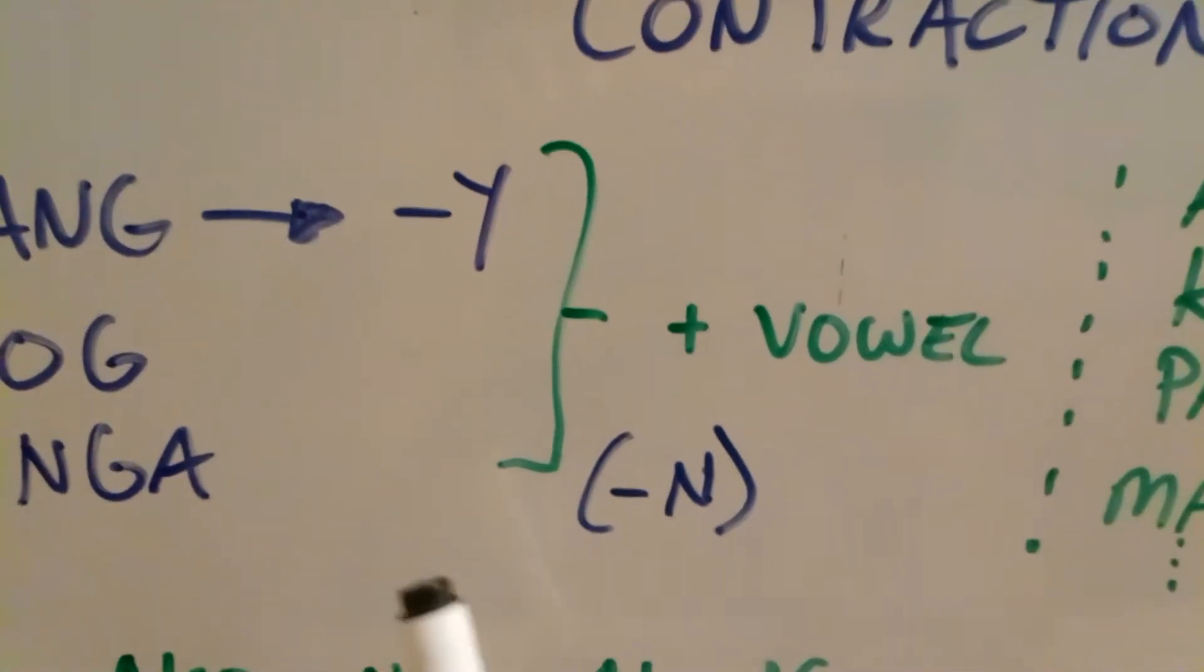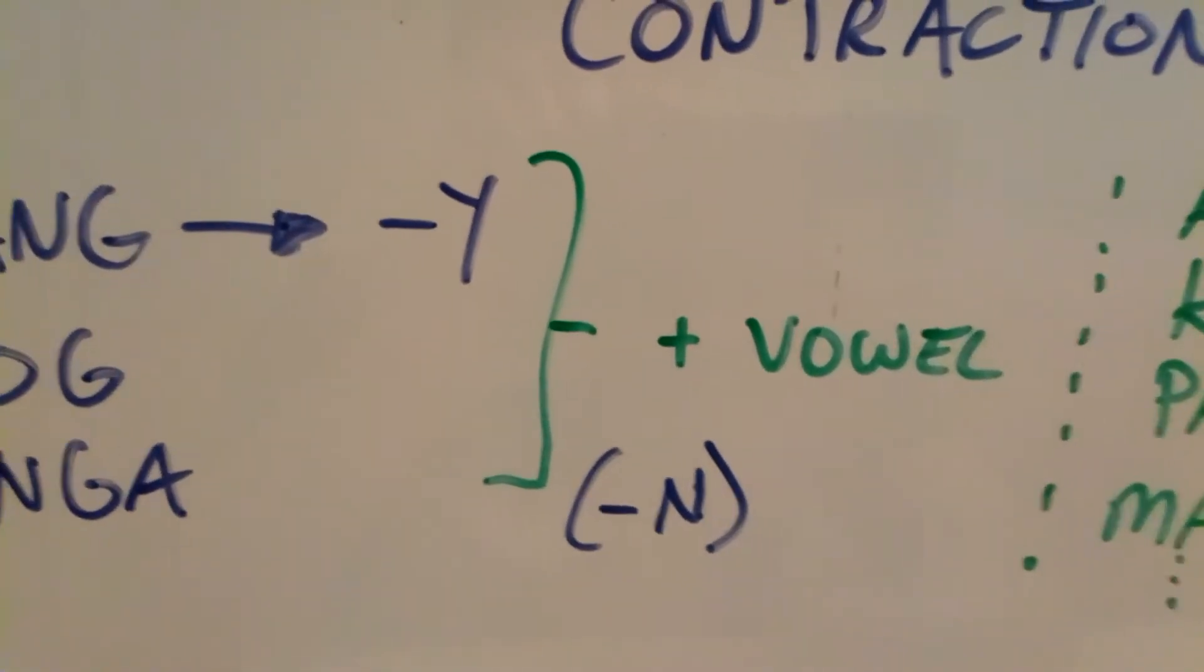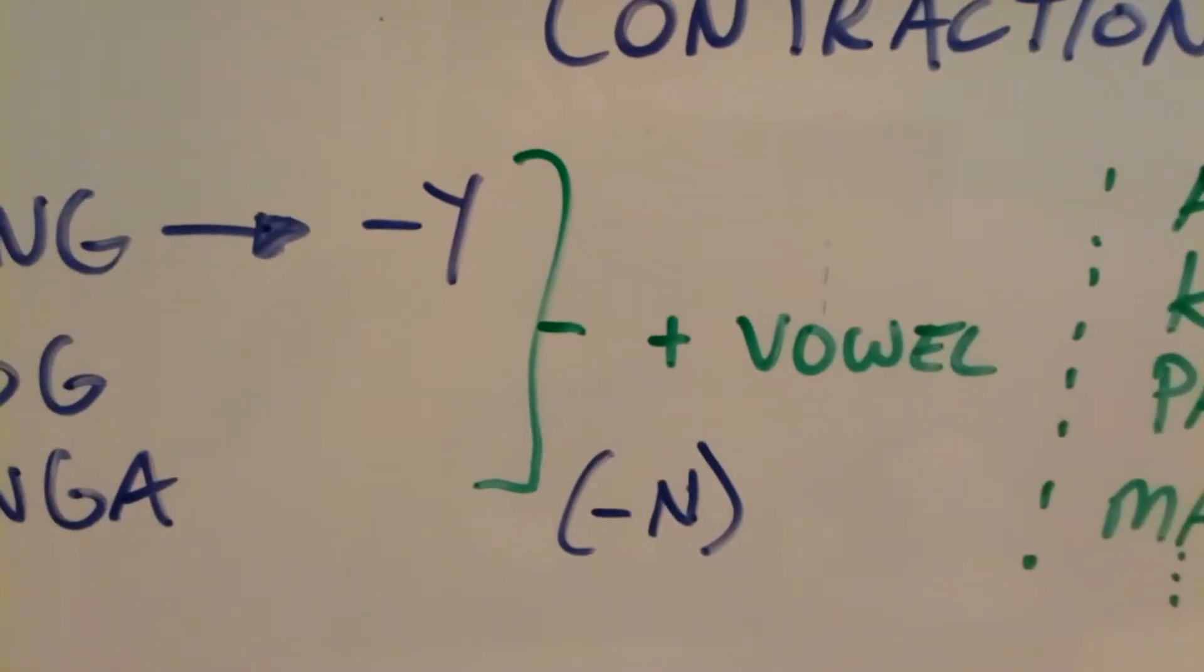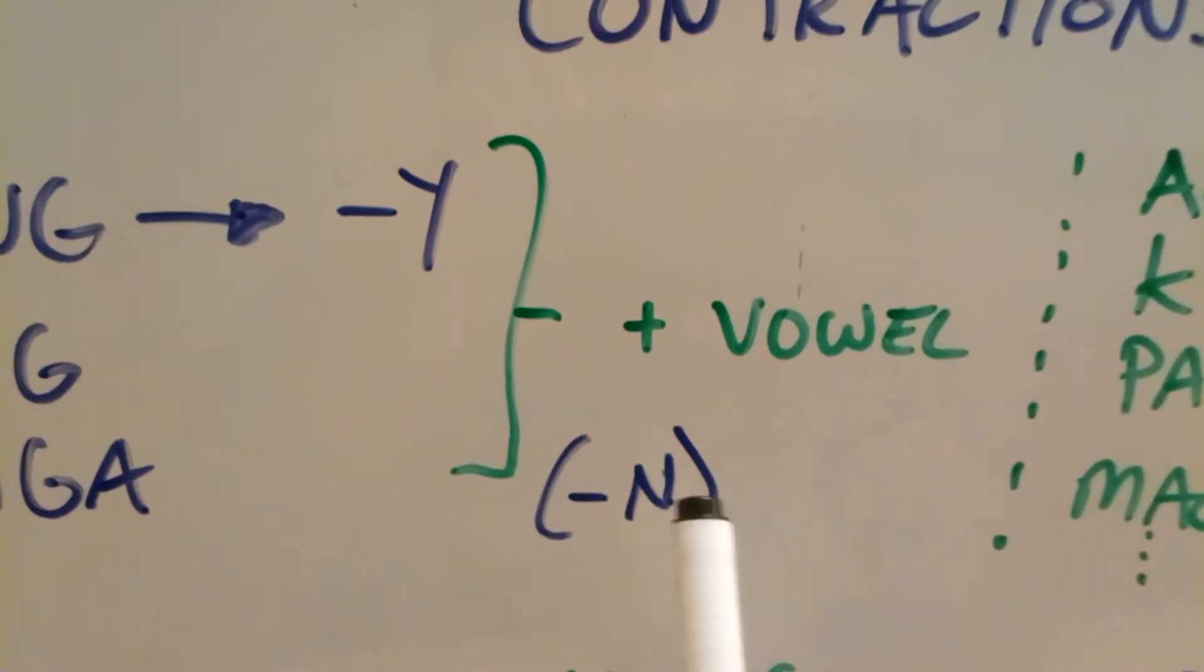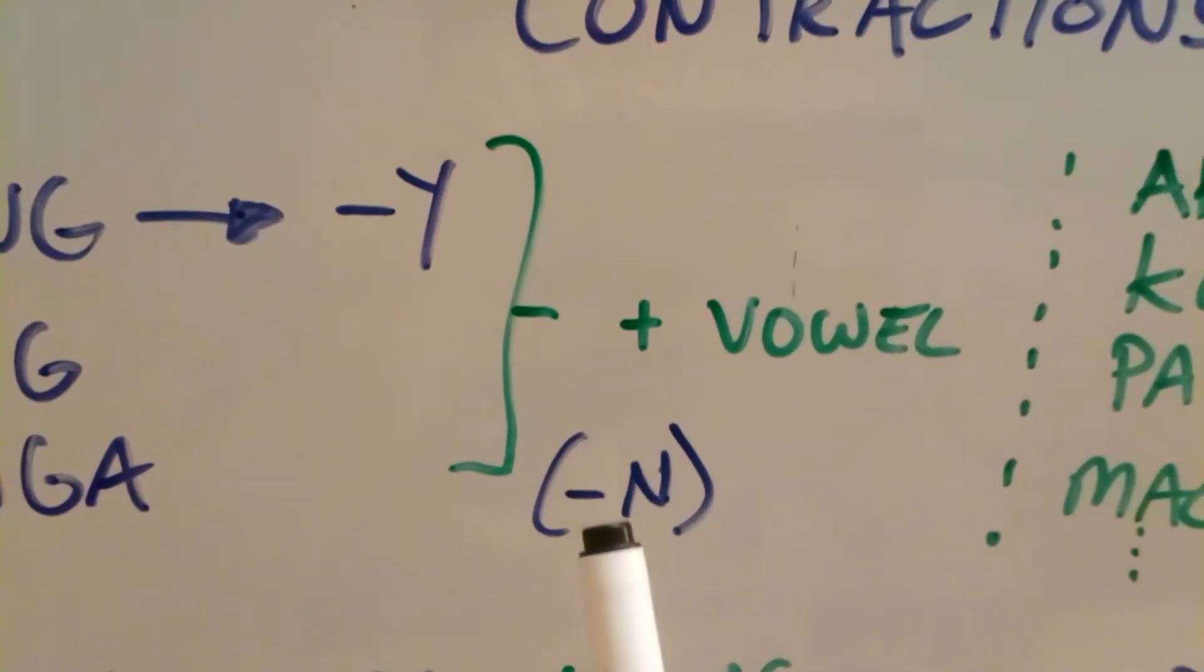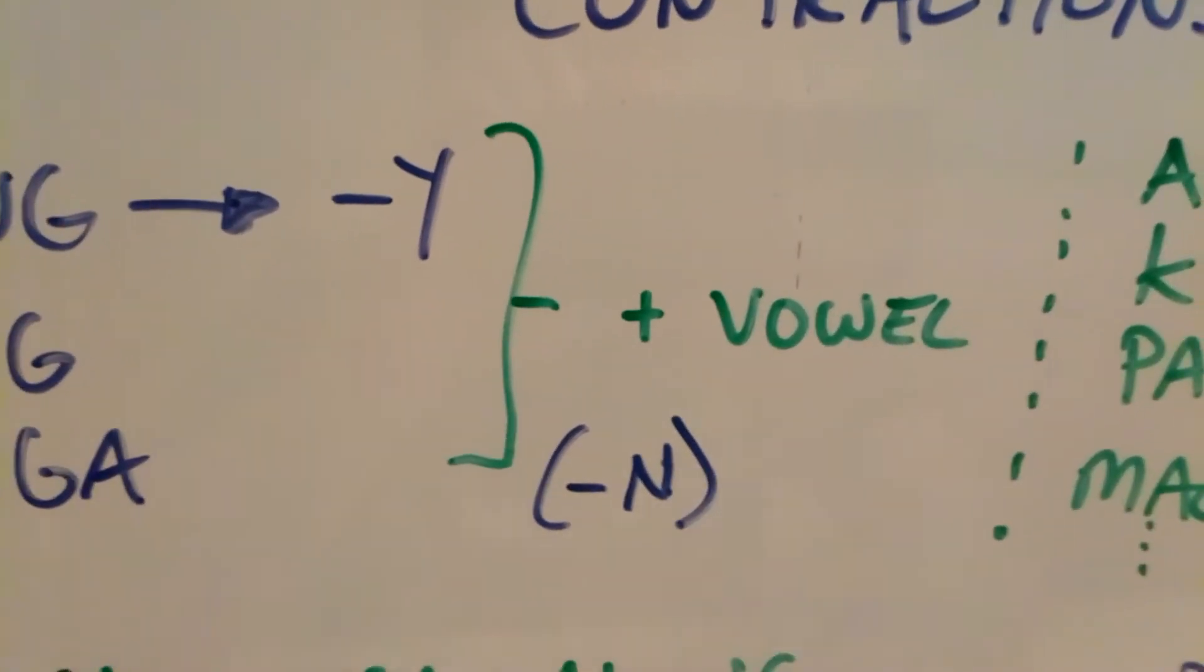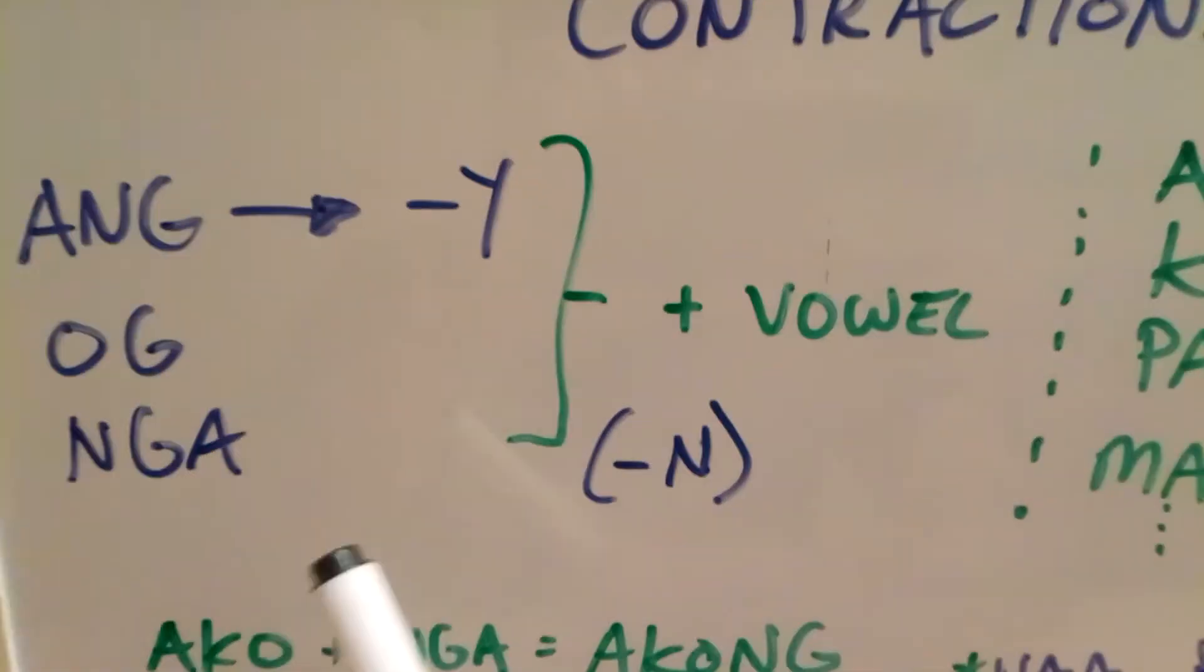For nga, however, nga can end in a vowel or an n, because you're just gonna add the ng ending. So you can put the ng ending after the n or after a vowel. And that's just for nga.